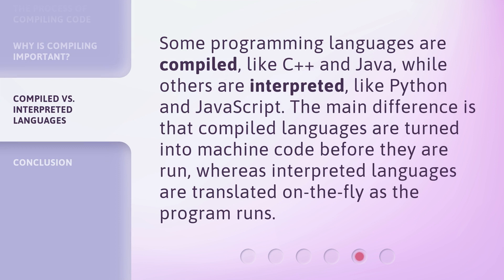Some programming languages are compiled, like C++ and Java, while others are interpreted, like Python and JavaScript. The main difference is that compiled languages are turned into machine code before they are run, whereas interpreted languages are translated on the fly as the program runs.